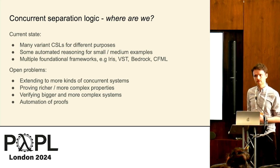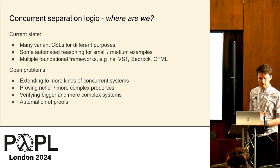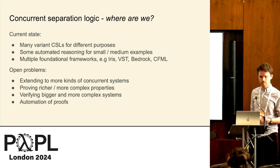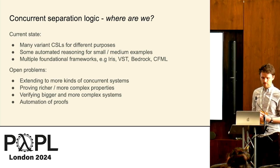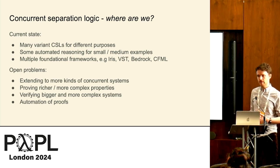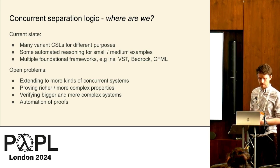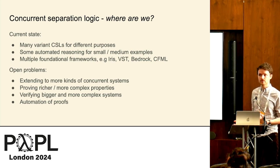The open problems here are still very significant. We want to extend to more kinds of concurrent systems, prove richer and more complex properties, and verify big systems. Verification is extremely challenging because the systems are very complicated, and the automation we have is very sparse.